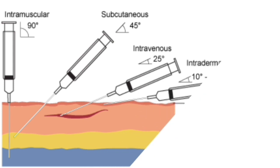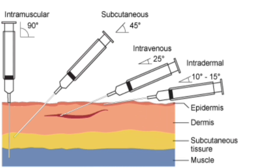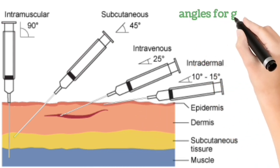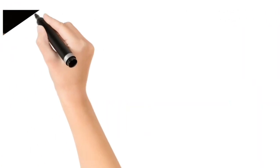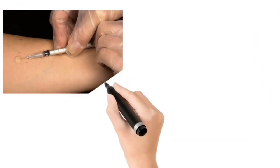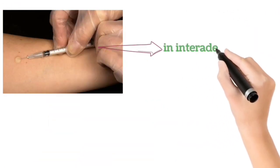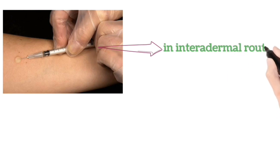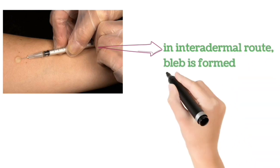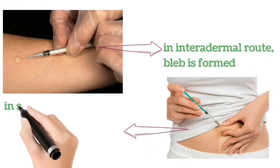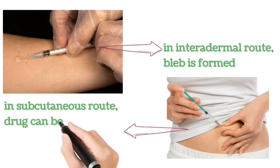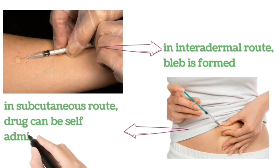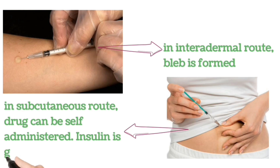Here is a picture showing the angles for giving injections. In intradermal route, a bleb is formed. In subcutaneous route, the drug can be self-administered — insulin is given by this route.